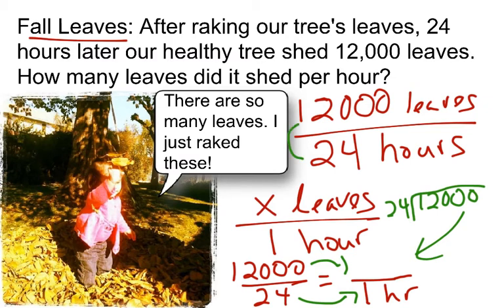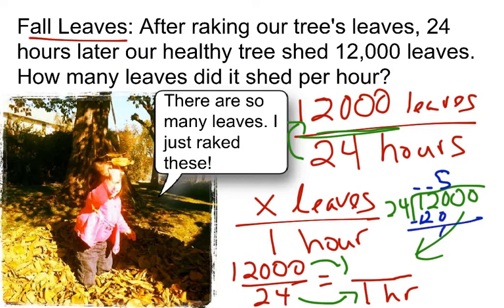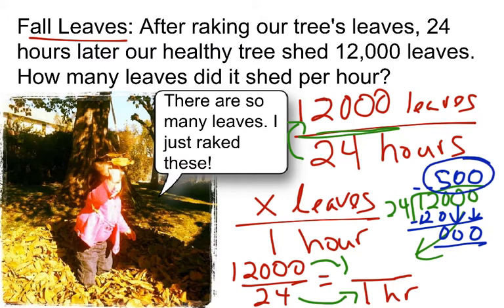It's important to note that I'm dividing 12,000 by 24. A fraction is always a division problem, and a unit rate is usually a division problem — or multiplication if you're expanding it. Working through the long division: 24 goes into 120 five times (5 × 24 = 120), remainder 0. Bringing down the zeros gives 500. Don't forget those extra zeros — they are a very important part of the division problem. So that is 500 leaves in one hour.